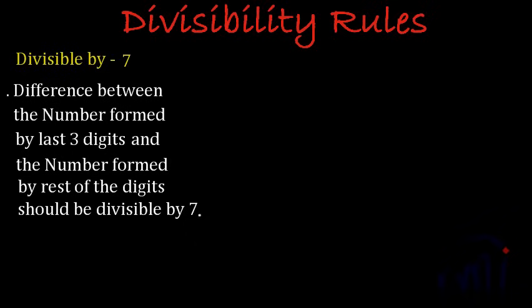Numbers in the thousands and above can be checked by this rule to see if they are divisible by 7 or not. If a number is 3 digits or less, you can just divide and check. It is easier to divide and check if the number is smaller. For bigger numbers only, we need divisibility rules.